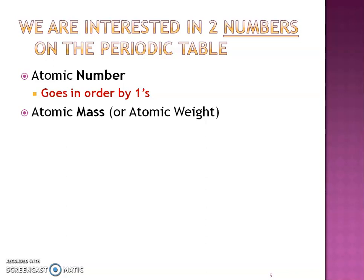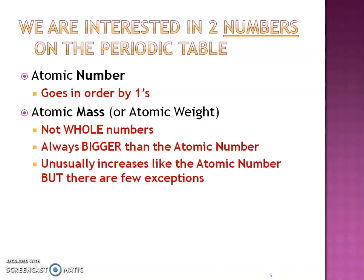The atomic number goes literally in order as if you're reading a book — from left to right, then the next row, left to right, and then the next row. We call them periods. How about the atomic mass? Sometimes it's also called the atomic weight on the periodic table. Did you notice that they're not whole numbers — they're decimals? They're always bigger than the atomic number of that element, and most of the time they increase like the atomic number, but there are some exceptions you'll notice later in the periodic table unit.